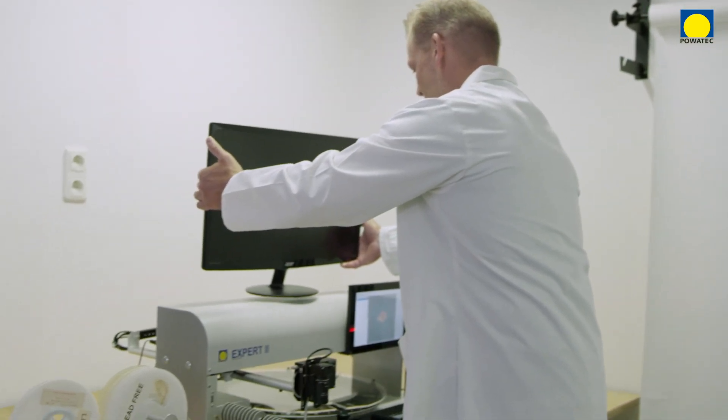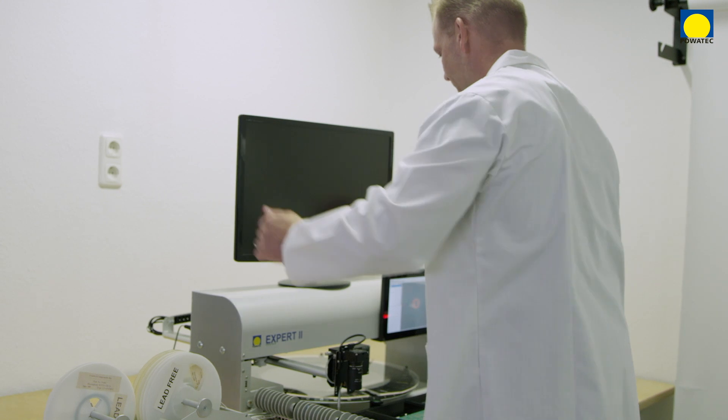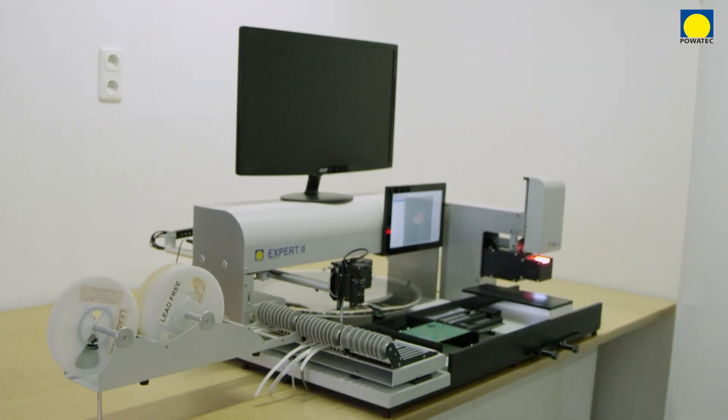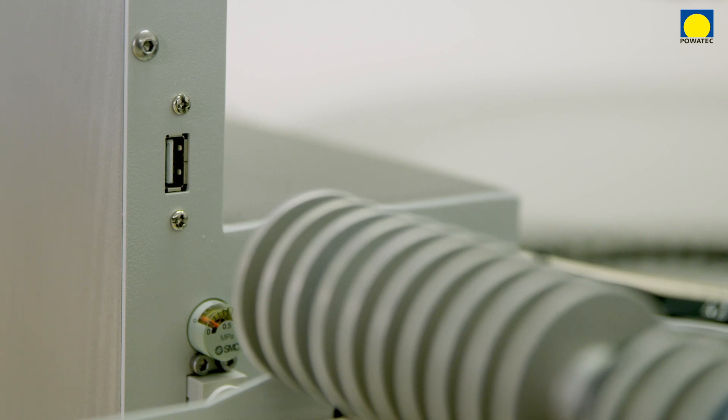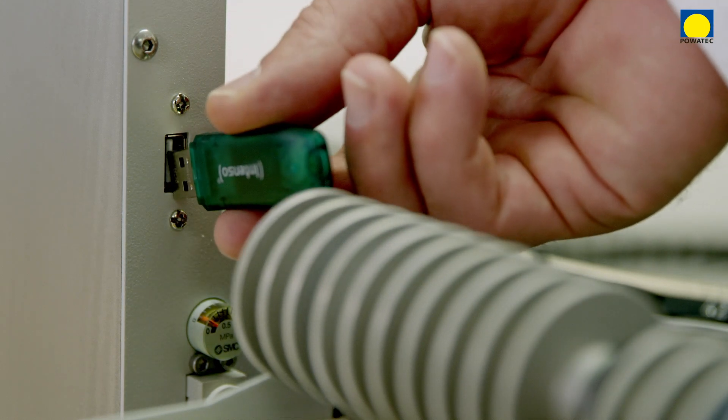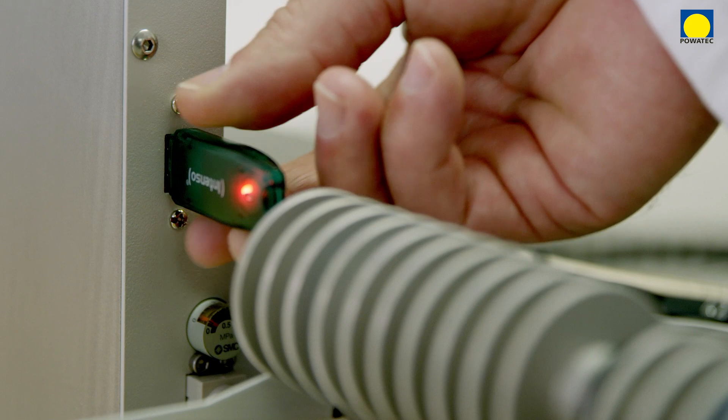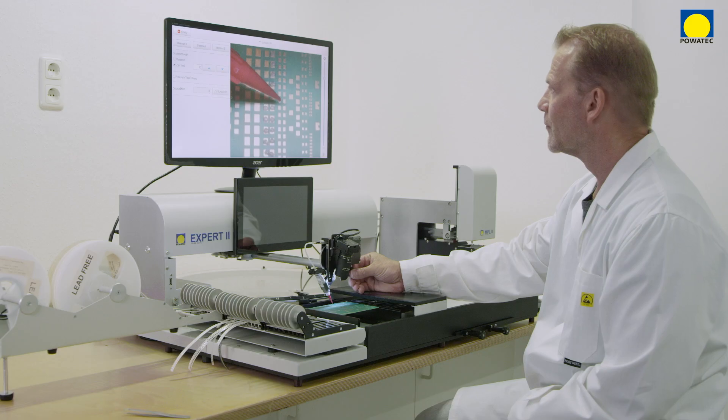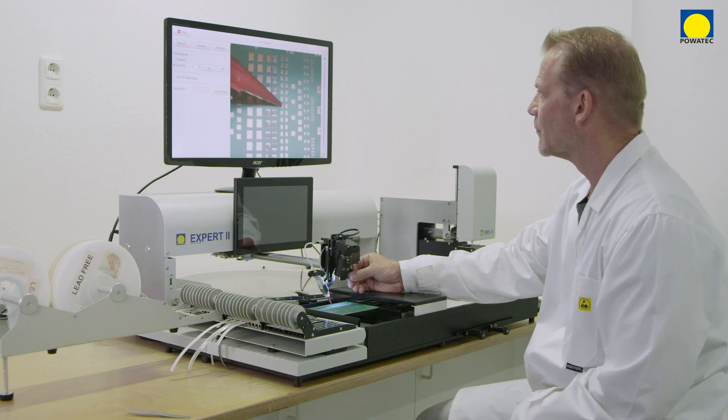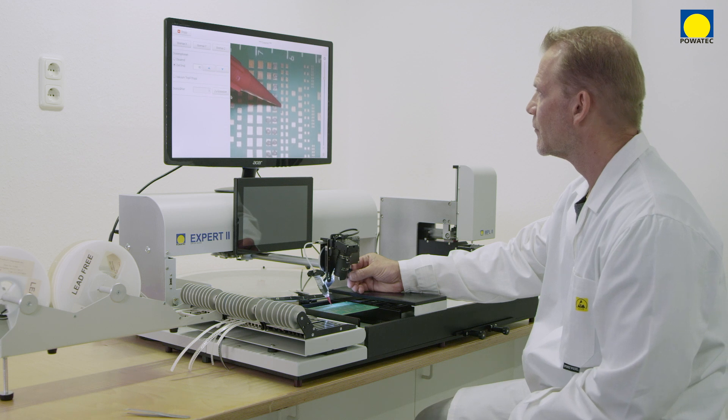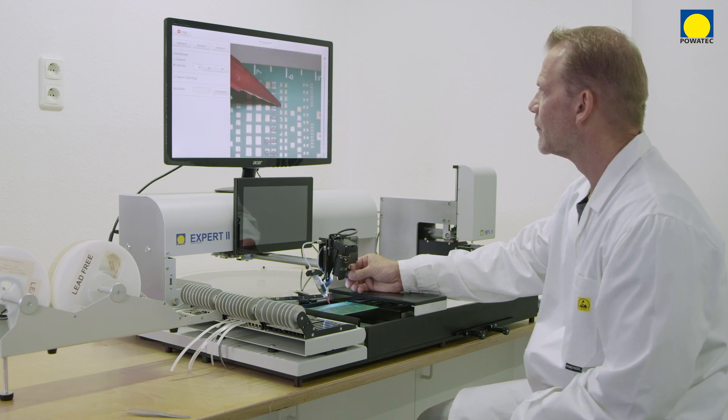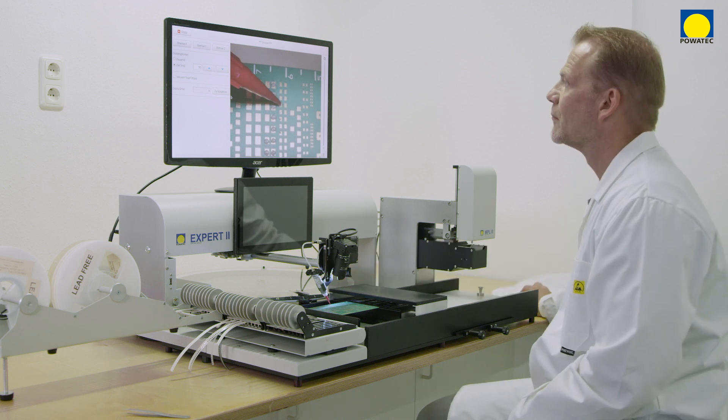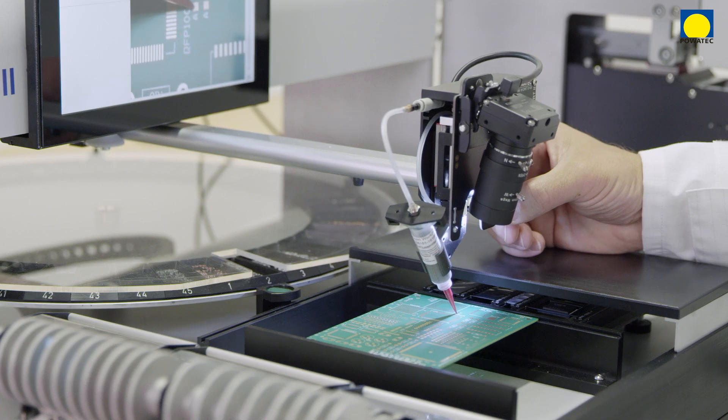If required, an external keyboard and mouse can be connected via USB. An HDMI connection for an external monitor is also available. A USB port integrated on the front panel allows data to be conveniently transferred via a stick. The system comes with a foot switch as standard. This allows you to operate the expert, the microplacer, and the dispenser. The switch is activated for each selected function.